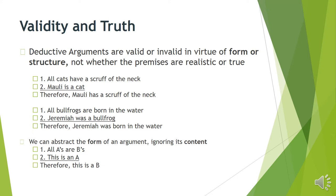You can think abstractly about the form of an argument and ignore its content. The abstract form is: All A's are B; this thing is an A; therefore this thing is a B. We're relating two groups — A's are in the group of B, this thing is a member of the first group, so it has to be a member of the second group. That's the structure of both arguments, whether talking about Molly the cat or Jeremiah the bullfrog. So we can ignore what the argument is about and just think about how the premises relate to the conclusion.